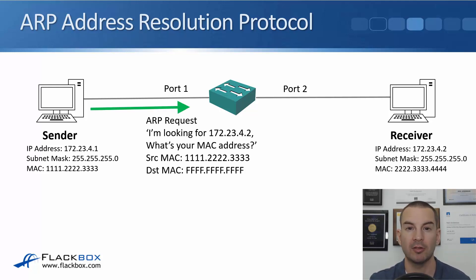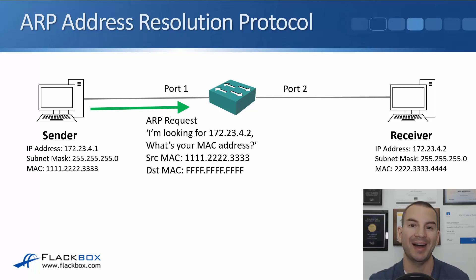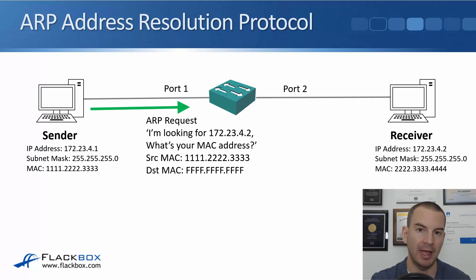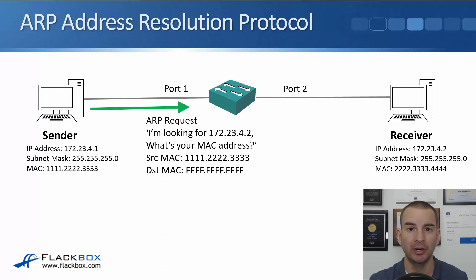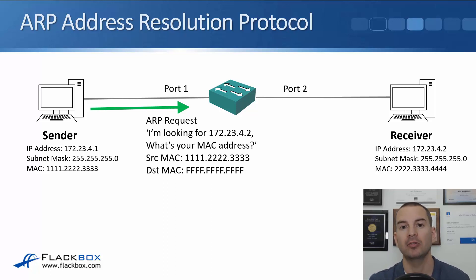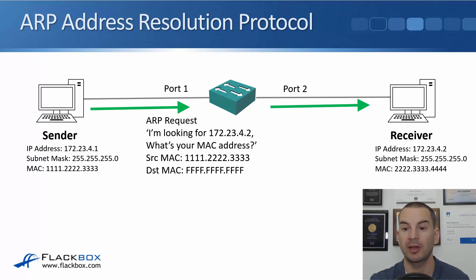The sender will send out an ARP request, which is a layer 2 broadcast. The ARP request says: I'm looking for 172.23.4.2 — what's your MAC address? That comes from the sender's MAC address of 1.2.3, and it goes to a destination MAC address of f.f.f, which is the layer 2 broadcast address. The sender has to send it out everywhere because it doesn't know the intended destination's MAC address yet. That comes into the switch, which sees it is broadcast traffic and floods it out all ports, hitting everything plugged in — including the receiver on the right, which will process that ARP request.